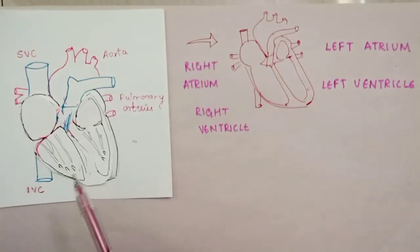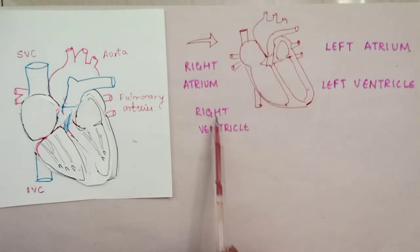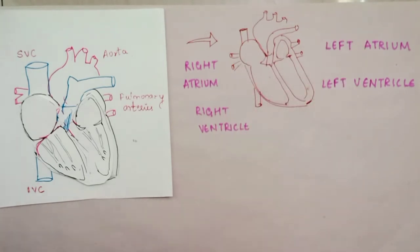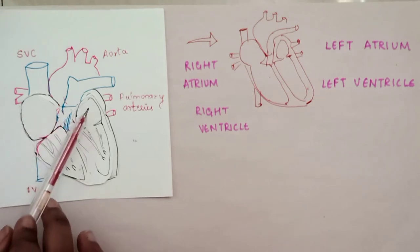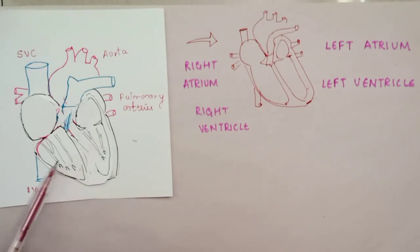The heart has four chambers: the right atrium, left atrium, right ventricle, and left ventricle. The upper chambers are the atria, and the lower chambers are the ventricles.